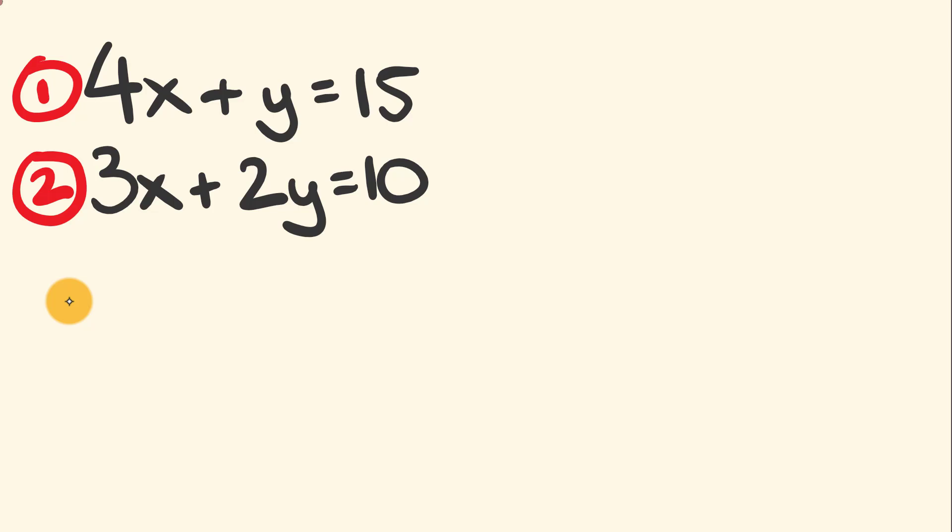We have 2y here and y here. What we could do is multiply the entire equation 1, and this would give us 2y in that equation. That's what we're going to do. Let's do this.